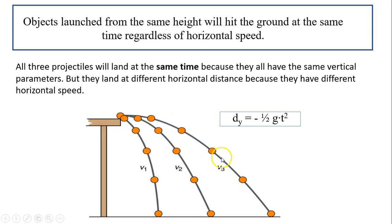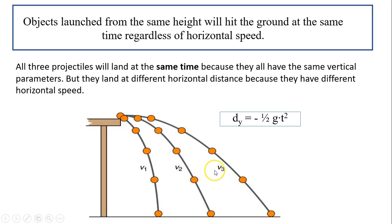Take a look at three horizontally launched projectiles. They have the same height, the same vertical acceleration, and the same initial vertical velocity. The difference is they have different horizontal speeds. But for all three projectiles, they will land at the same time because they have the same Dy and the same g — that's why they have the same time.